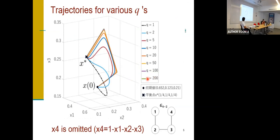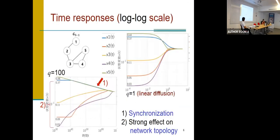This is a numerical experiment. When q is very large, then the trajectory follows a certain polyhedral. And this is the time response. So, q equals 1 is the linear diffusion. But when q is very large, you can find a synchronization phenomena. And this part I don't say in detail, but it's strongly affected by network topology.